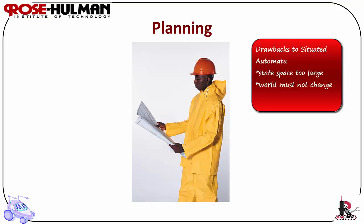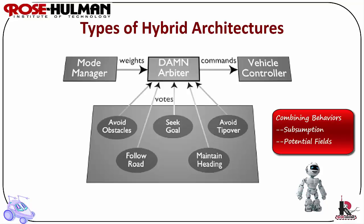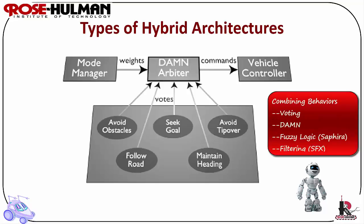If you are going to store plans, the world and the goals must not change. Types of hybrid architectures are distinguished by how they differentiate reaction from deliberation, how responsibilities in the deliberative portion are organized, and how overall behavior emerges. There are two primary means for combining reactive behaviors: subsumption and potential fields. Since these are limited, three additional mechanisms exist: voting (the Dynamic Autonomous Mobile Navigation, or DAM system), fuzzy logic (Saphira), and filtering (SFX).